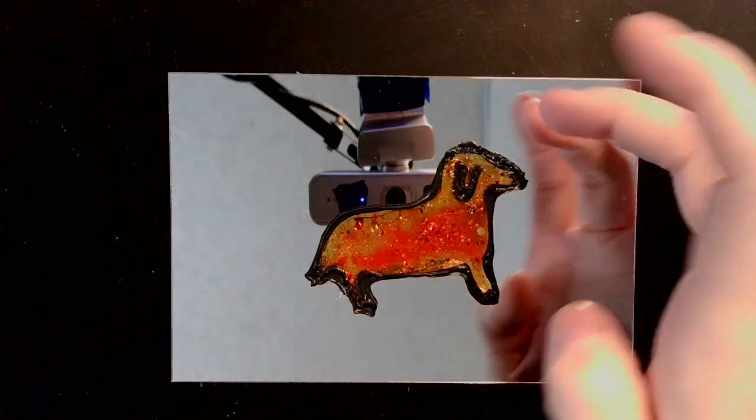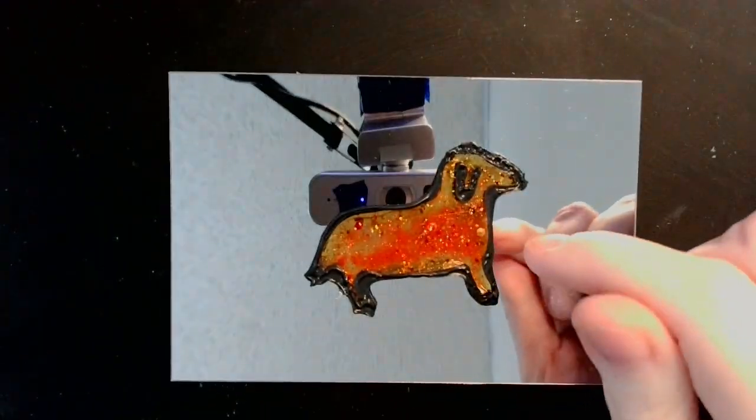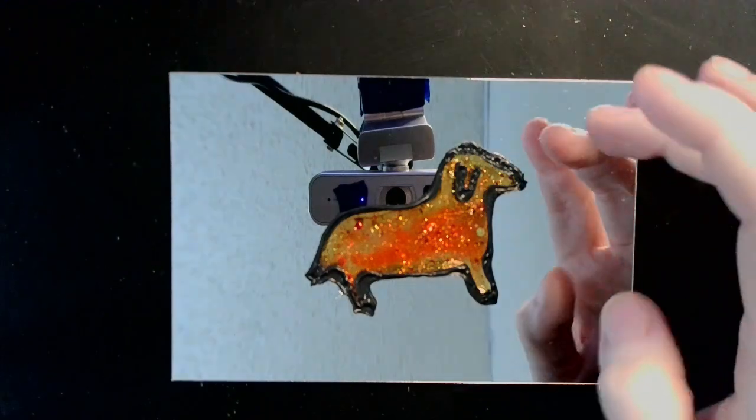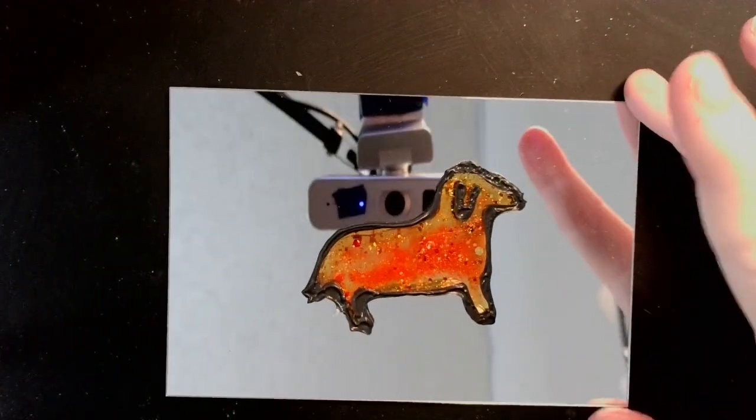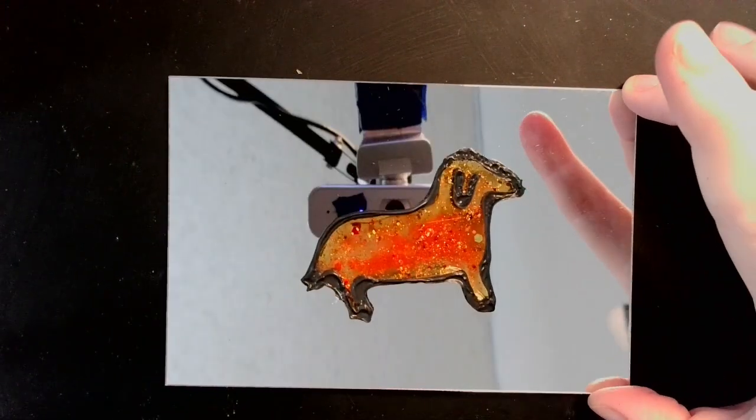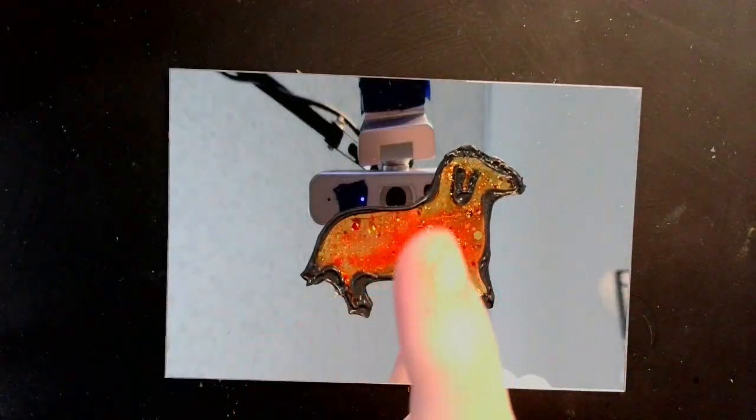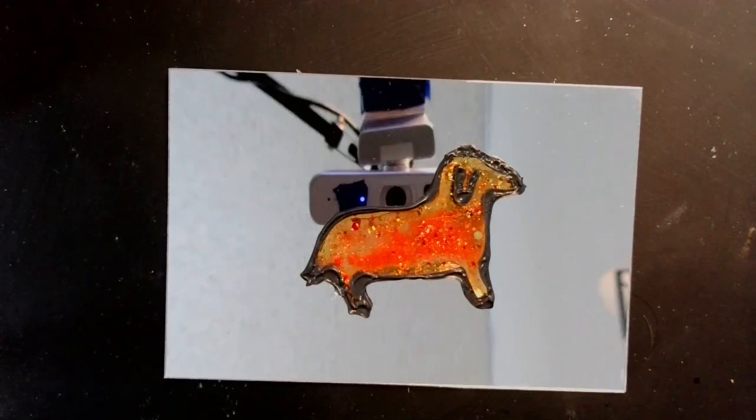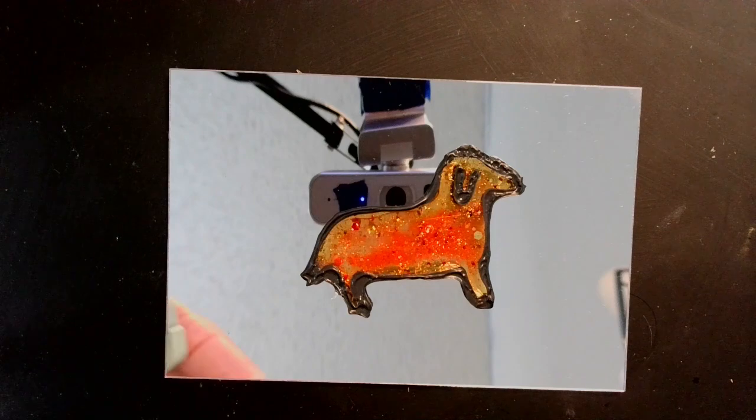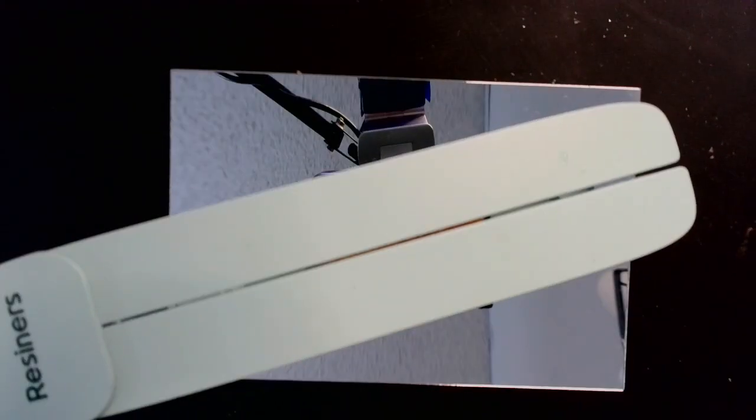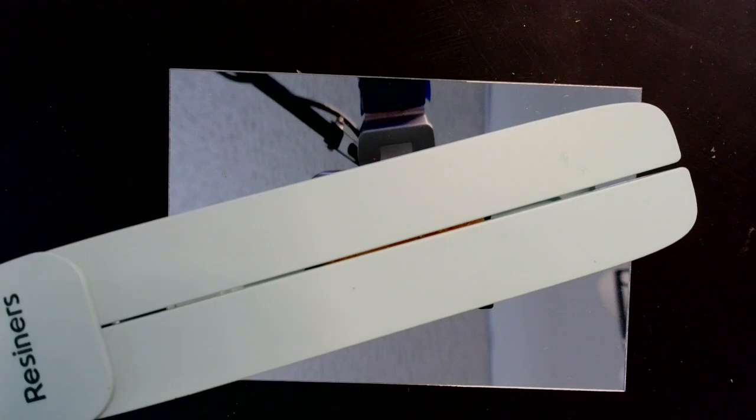Okay, so I've popped off the Halloweenie dog from the paper, from the blue tape, and I've put it on one of my little acrylic mirror pieces that I got from BB Craft. You can see the camera up there. And we're just going to give this another cure on the back side. And I will see you when it's done. See you soon.